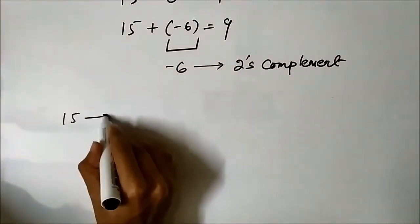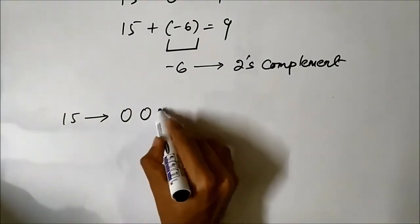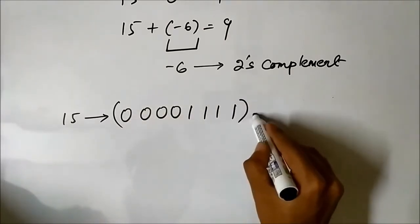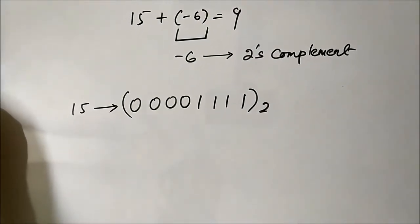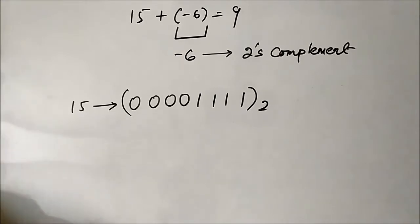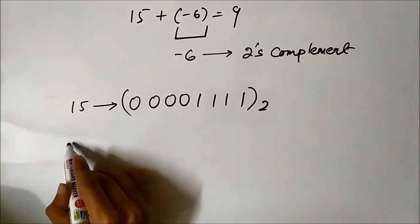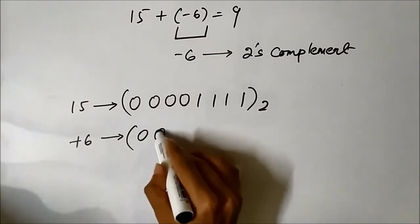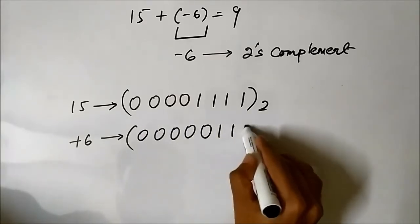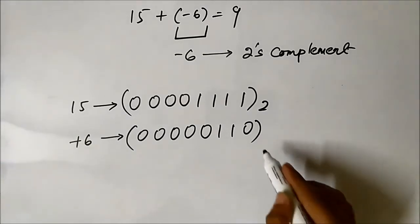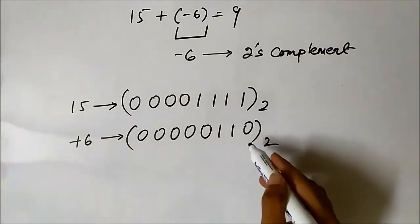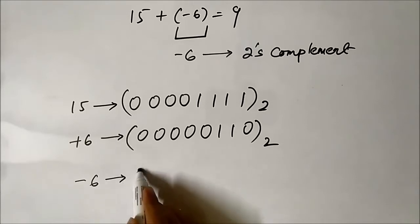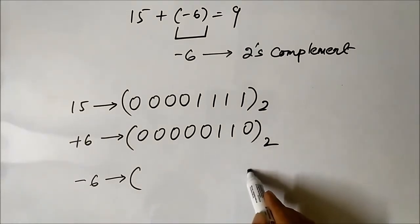15 can be represented in binary form as 0 0 0 0 1 1 1 1 — we are using 8-bit format. This is 15. For minus 6, we have to use the 2s complement conversion process. First we write plus 6, which in binary form is 0 0 0 0 0 1 1 0.